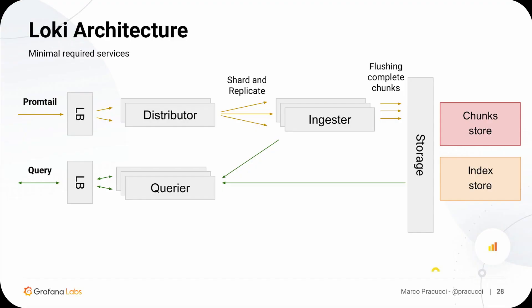Getting back to the original architecture, the shared storage is now no longer a black box. It's composed of two storages: the chunk storage, which contains your compressed logs, and the index storage, which contains an inverted index that indexes each chunk by label set and the time range of each chunk.